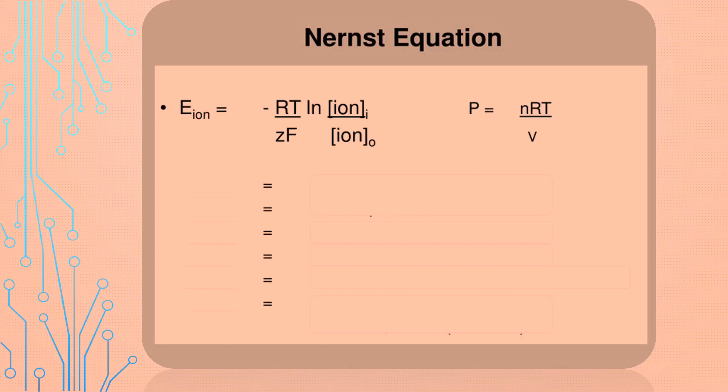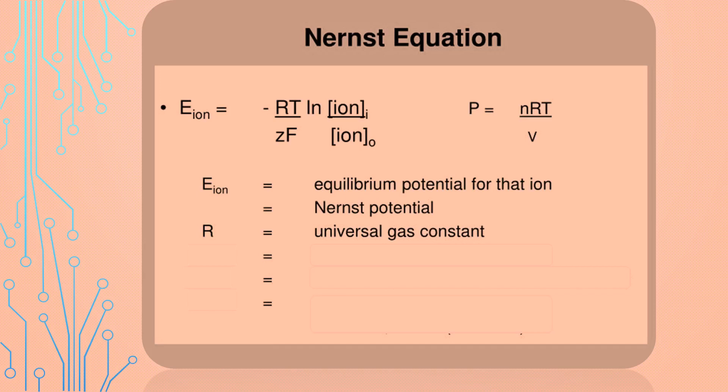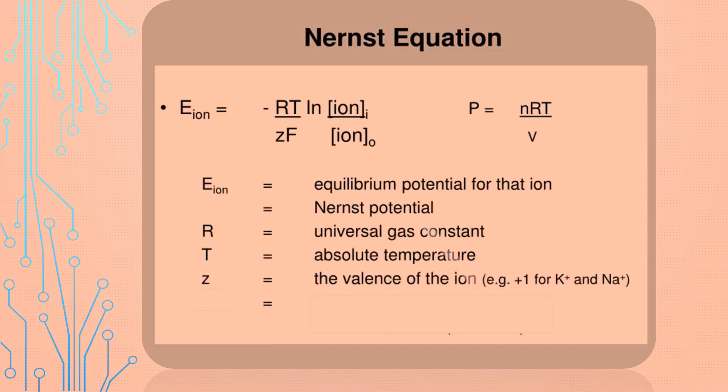In front of us is the Nernst equation, whereas E represents the electrical potential, R represents the universal gas constant, which equals 8.31 joules per Kelvin per mole, T represents the temperature in Kelvin, which equals 298 Kelvin at 25 degrees Celsius, Z represents the valence of the charged particles.